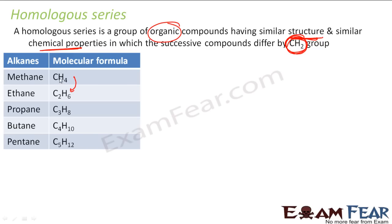And they differ only by CH2. If you compare methane and ethane, there is 1 carbon and 2 hydrogens extra. Similarly comparing ethane and propane, again 1 carbon and 2 hydrogens extra. Comparing propane and butane, 1 carbon extra and 2 hydrogens extra. And comparing butane and pentane, again 1 carbon and 2 hydrogens extra. So the difference is only CH2.